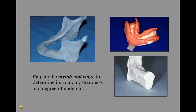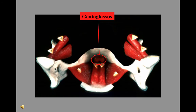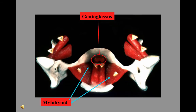You can palpate the mylohyoid ridge to determine its contour, sharpness, and degree of undercut. A sharp mylohyoid ridge can present problems of irritation during the adjustment phase, as the skin over this area is very thin. Look at the fibers of the mylohyoid — they are short in the premolar-to-premolar area and the flange cannot go below these fibers there. In the posterior area, our denture can violate that muscle slightly from the molar to the retromylohyoid fossa.